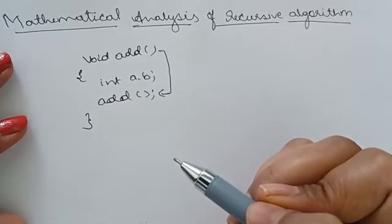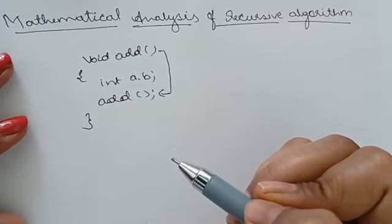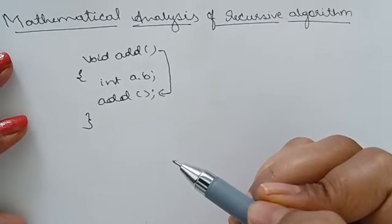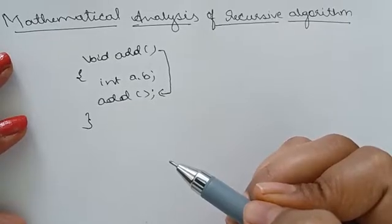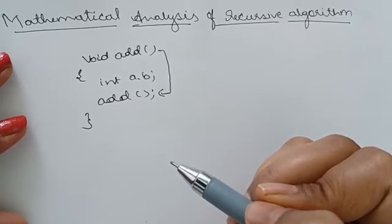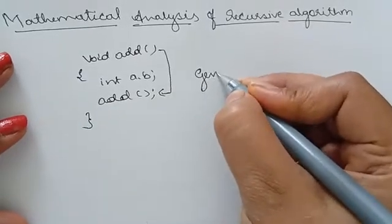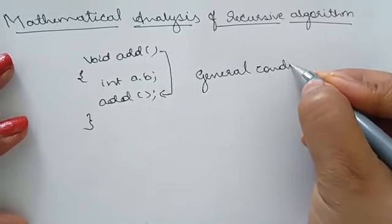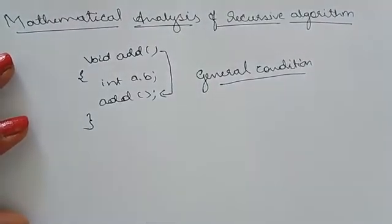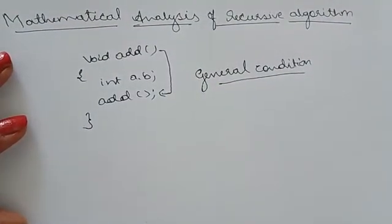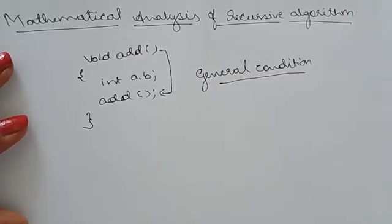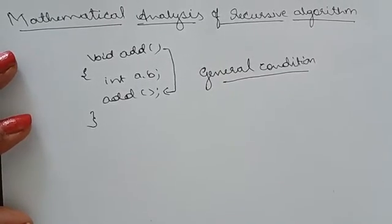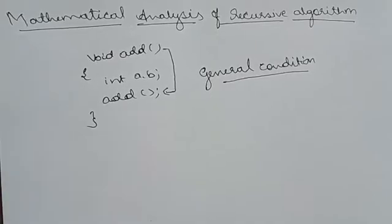For recursive algorithms, the mathematical analysis steps are similar to non-recursive ones, but the key difference is that here you have to find out the general condition. If we find the general condition, then 50% of the work is done. With the general condition, we start solving for time. I will take an example: computing the factorial of n numbers.